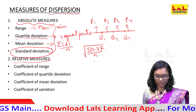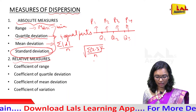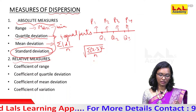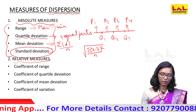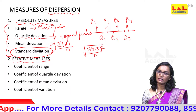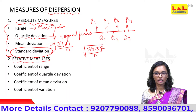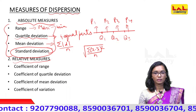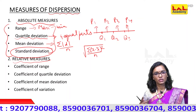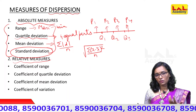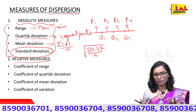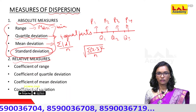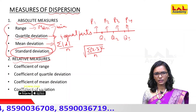Relative Measures is related to Absolute Measures. Absolute Measures is related to the data points in the unit — kilometer, meter, gram, centimeter. This is related to Absolute Measures. We calculate Absolute Measures — that is the unit.